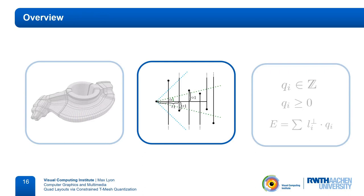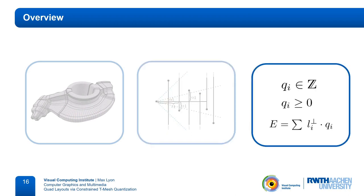Now that we know how to create the t-mesh and how to constrain the quantization such that the layout will be of high quality, the remaining question is how to find a quantization that actually adheres to these constraints. We do this using an integer linear program.